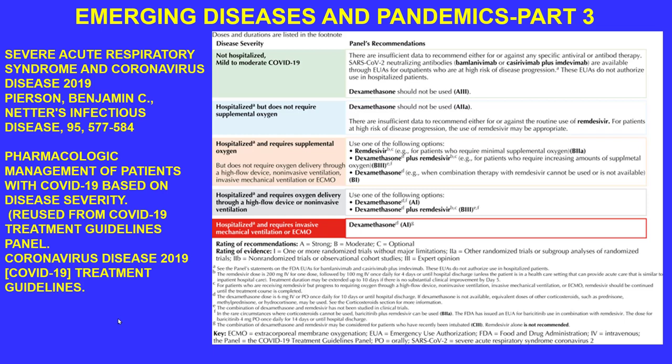The panel recommendations for helping individuals depend on disease severity of COVID. Pharmacological management is based on severity — ranging from mild to hospitalized cases. Even for those hospitalized who don't yet need external oxygen, dexamethasone is used to reduce excess fluid and inflammation occurring in the lungs.